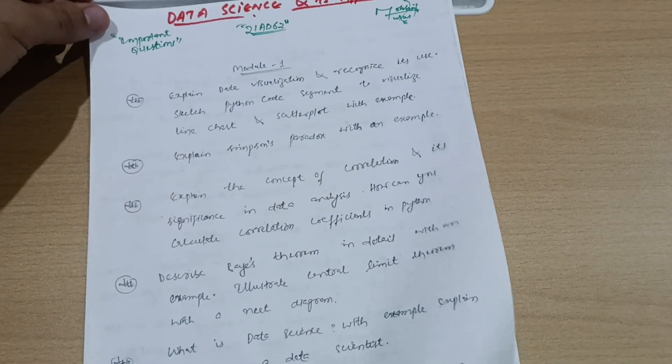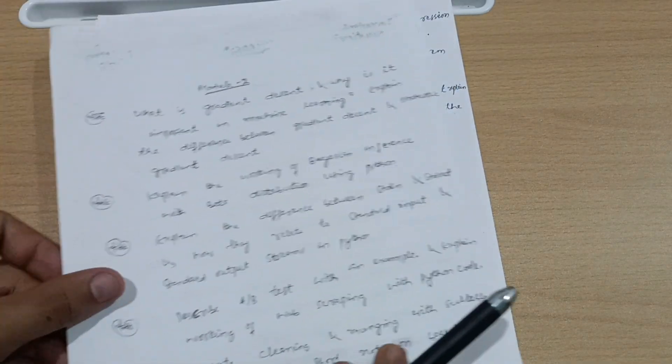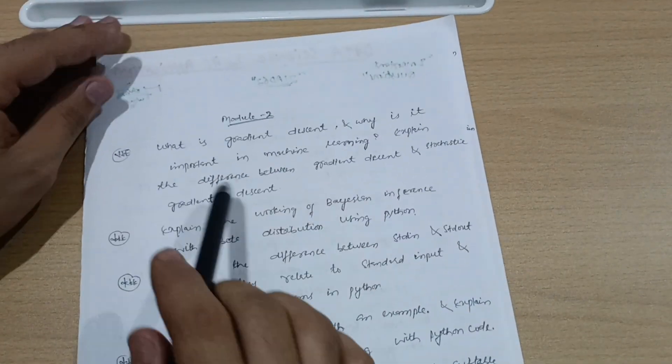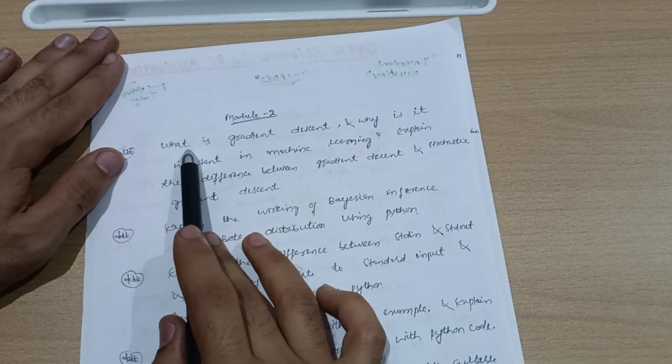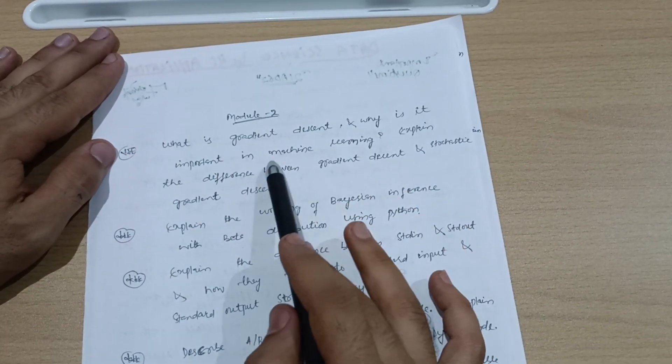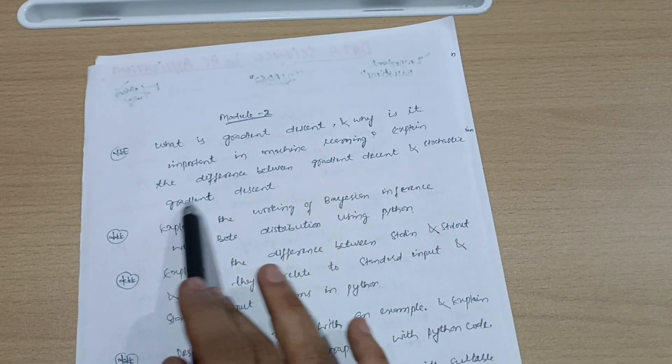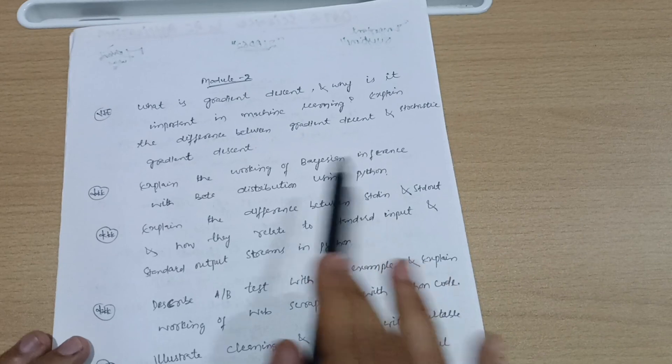That is all about module 1. You should cover these super important questions as early as possible. Module 2: What is gradient descent and why is it important in machine learning? Explain the difference between gradient descent and stochastic gradient descent.